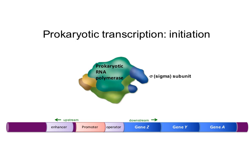Let's look at the first step in transcription — initiation — which is true for both prokaryotes and eukaryotes. In prokaryotes specifically, the RNA polymerase, which reads the DNA and makes an RNA transcript, has a sigma subunit. This sigma subunit allows it to bind to the promoter region directly, recognizing the promoter in prokaryotes and initiating transcription. So the first step in prokaryotic transcription is the RNA polymerase binding to the promoter region, mediated by the sigma subunit.